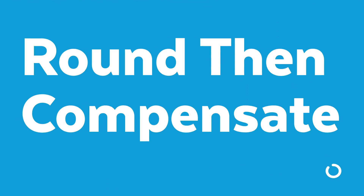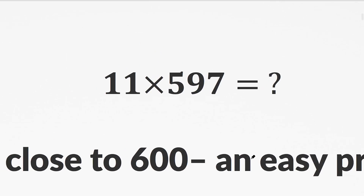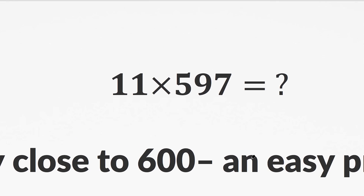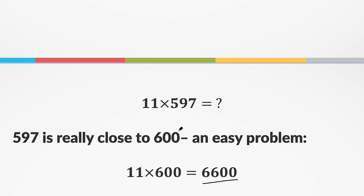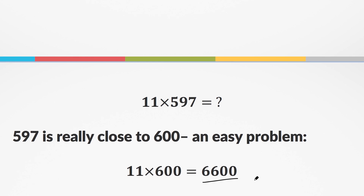My second mental math secret is the method of round, then compensate. This is a really nifty trick I use when I have numbers that are almost something easy to deal with. Here we've got 11 times 597. This would be a lot easier if it were 11 times 600 — that's a much easier problem. 597 is super close to 600; it's only three away. So what if I did that problem? That's 6,600 — I can probably do that in my head.